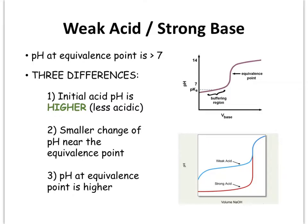The first major difference is that the pH at the equivalence point is going to be greater than 7. The easiest way to think about this is that you have a weak acid but a strong base, so the base is stronger and it wins out. So at the equivalence point, you're expecting it to be higher or more basic. We'll go through why this takes place when we look at the problem itself.